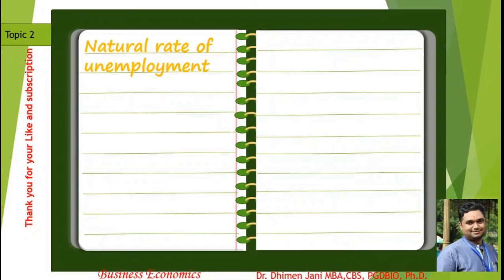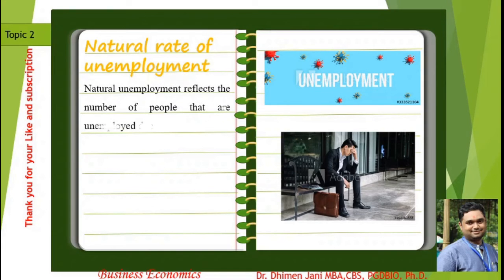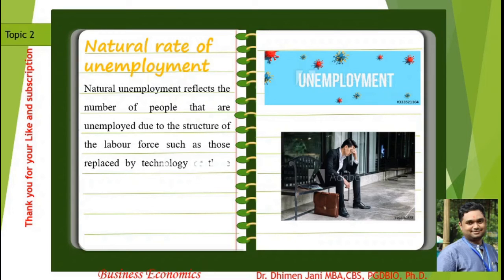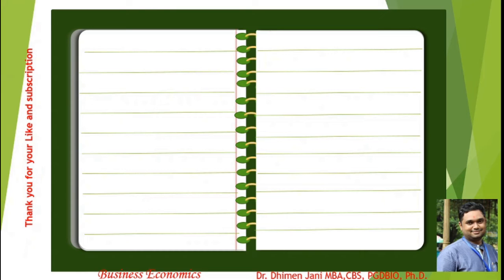Topic number two is the natural rate of unemployment. The natural rate of unemployment reflects the number of people unemployed due to the structure of the labor force — such as those replaced by technology or those who lack certain skills to gain employment. In short, it is a combination of frictional unemployment (temporary unemployment) and structural unemployment (longer-term unemployment due to lack of skills).